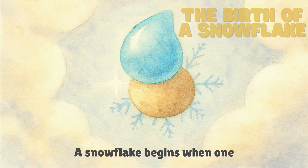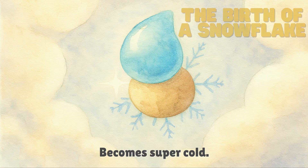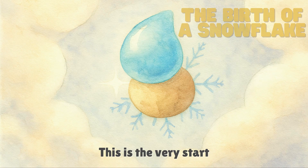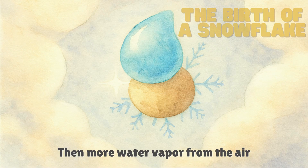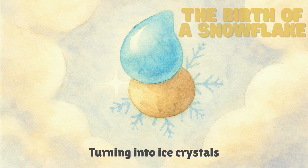A snowflake begins when one tiny piece of dust or pollen in the cloud becomes super cold. A water droplet sticks to it and freezes. This is the very start — a baby snowflake. Then more water vapor from the air sticks to it, turning into ice crystals.